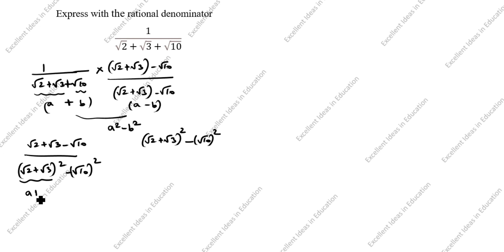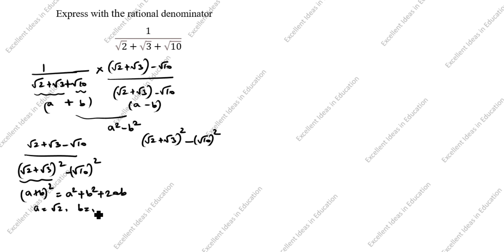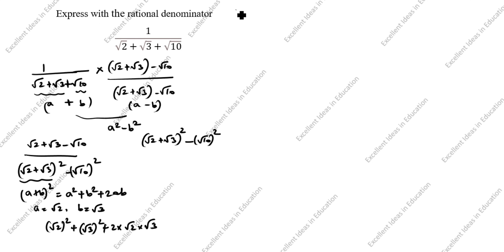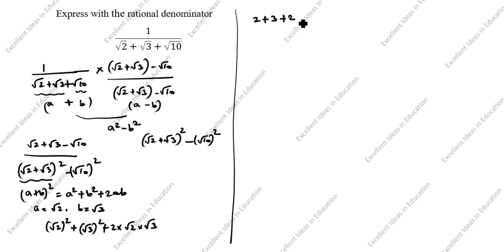Now we expand (root 2 plus root 3) whole squared using the formula a squared plus b squared plus 2ab. Taking a equal to root 2 and b equal to root 3: a squared is root 2 whole squared, b squared is root 3 whole squared, plus 2 into root 2 into root 3. So root 2 squared is 2, root 3 squared is 3, plus 2 times root 6.